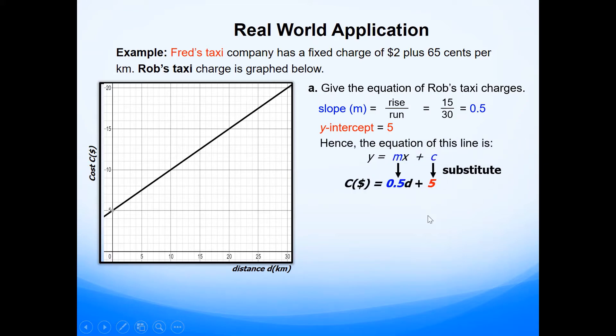And then we'll put these together, y equals mx plus c, the slope intercept form for straight line. Please do make sure that you substitute the gradient value and the y-intercept in the right spots. So the cost function is 0.5d plus 5, where d is the distance in kilometers.